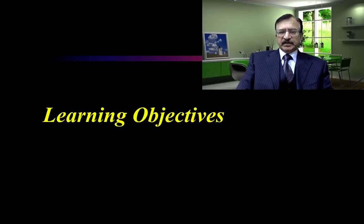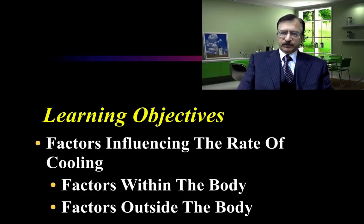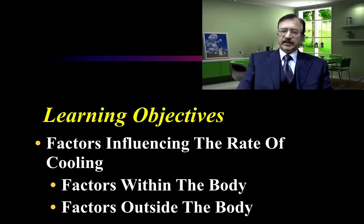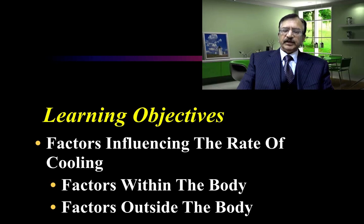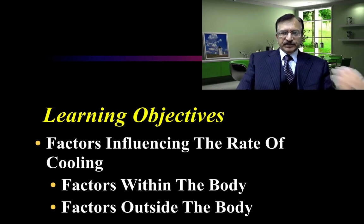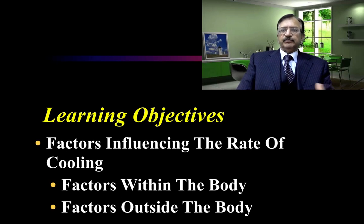The learning objective of this lecture is to discuss the factors that influence the rate of cooling. There are certain factors within the body — such as the temperature of the body, body size, nutrition, presence of clothing, and the manner and mode of death — and certain factors outside the body, which are the environmental factors, location where the body is found, presence of humidity, and environmental temperature.